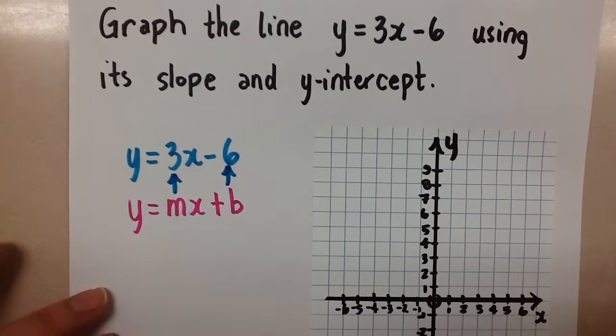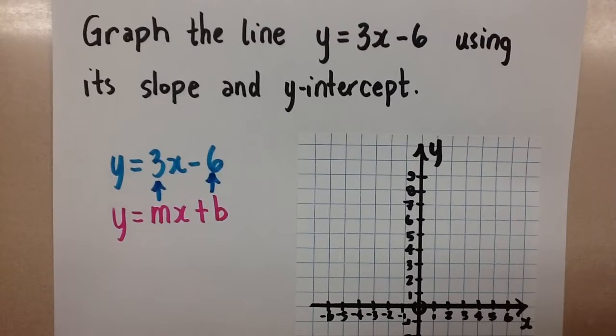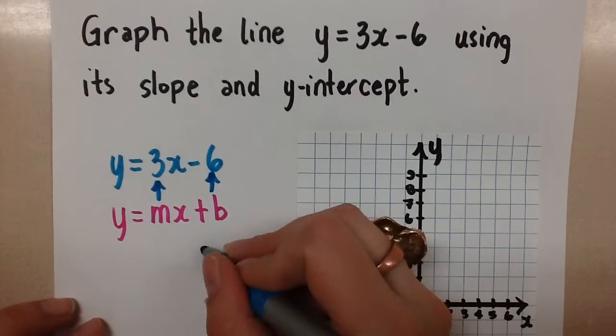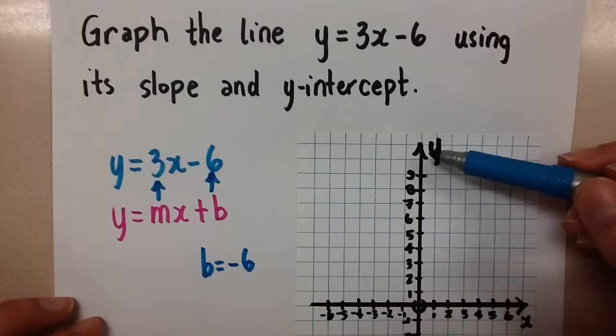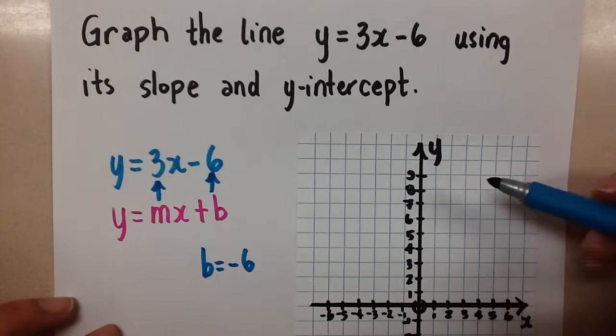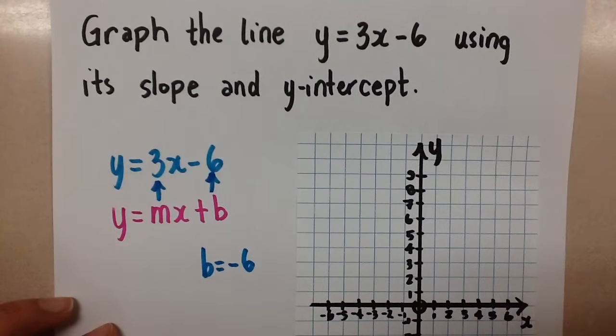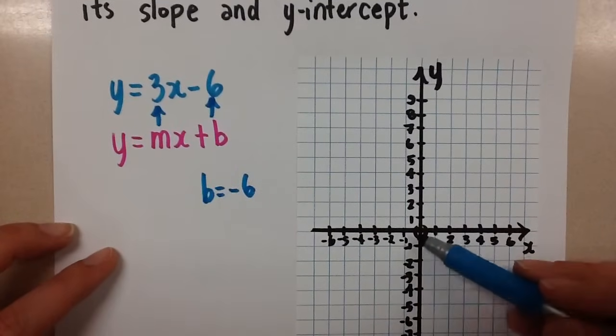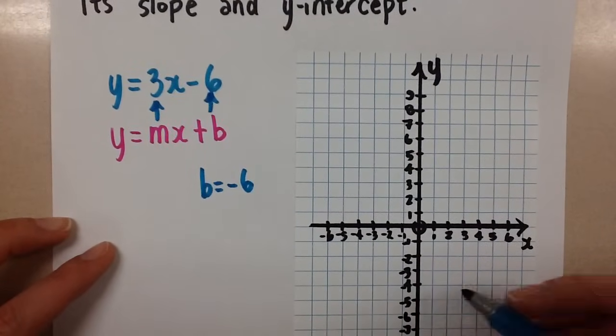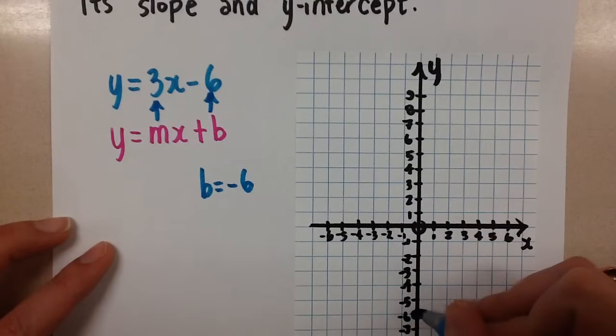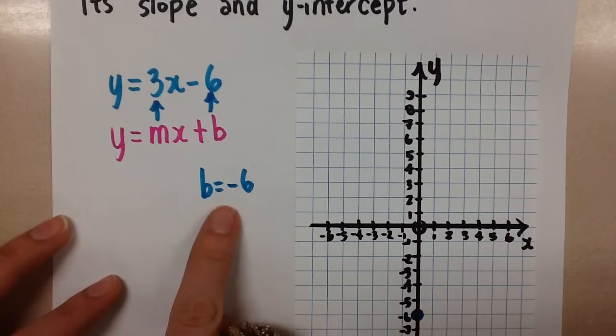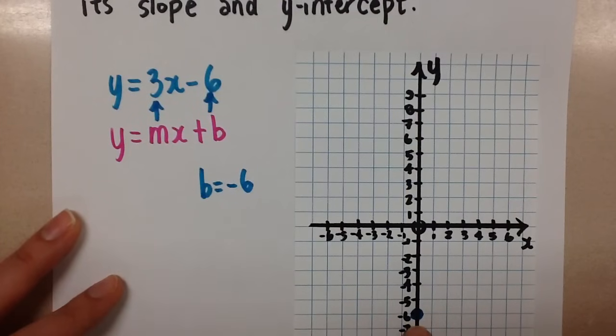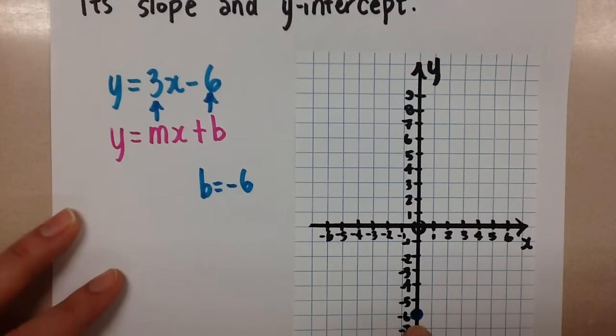When we're graphing by hand, we always start with the y-intercept. That's our starting point. If the y-intercept is negative 6, that means on the y-axis, the line will cross at negative 6. So let's go down here on the grid and put a point at y = -6. There's our y-intercept, that b value. The line has to cross there on the graph.